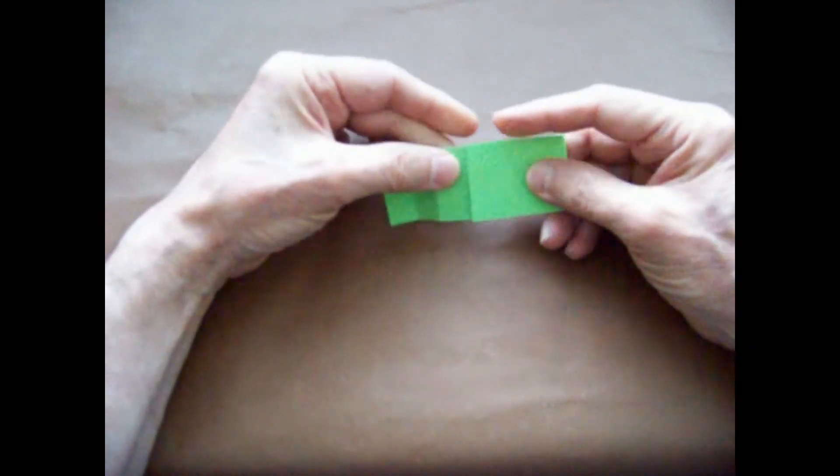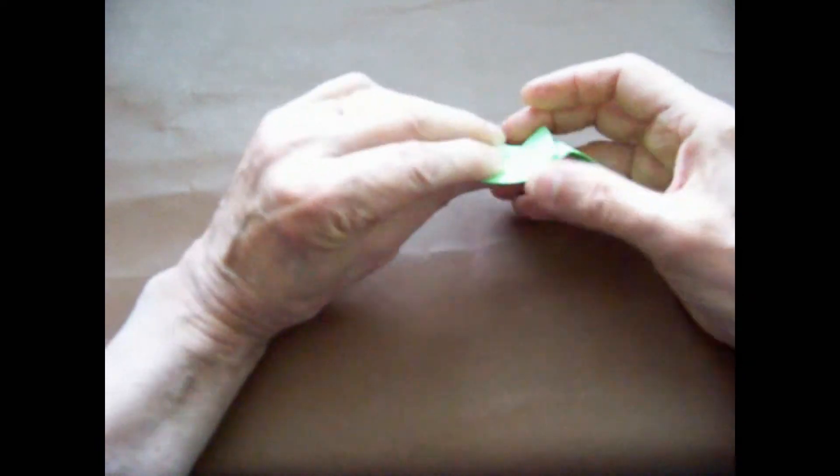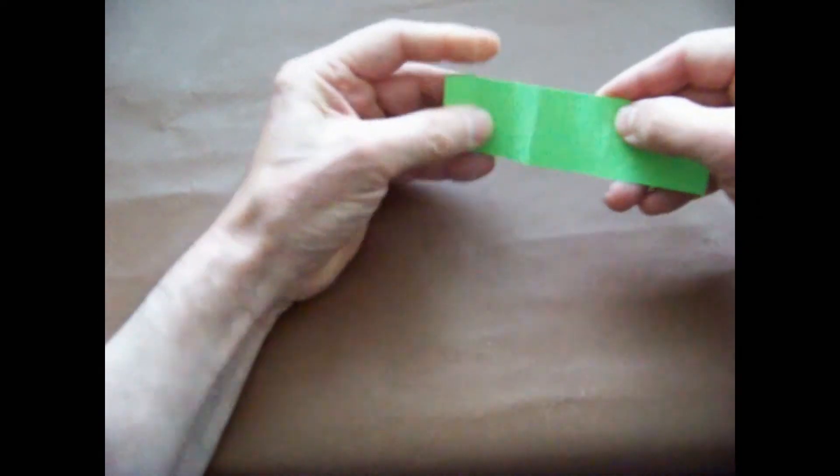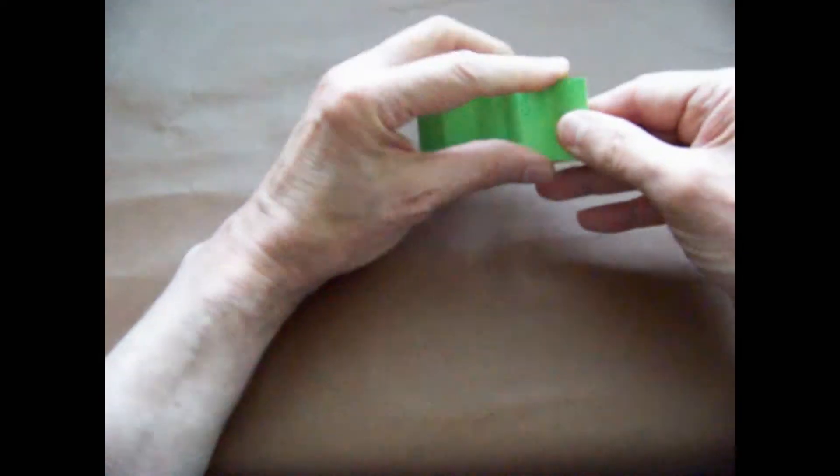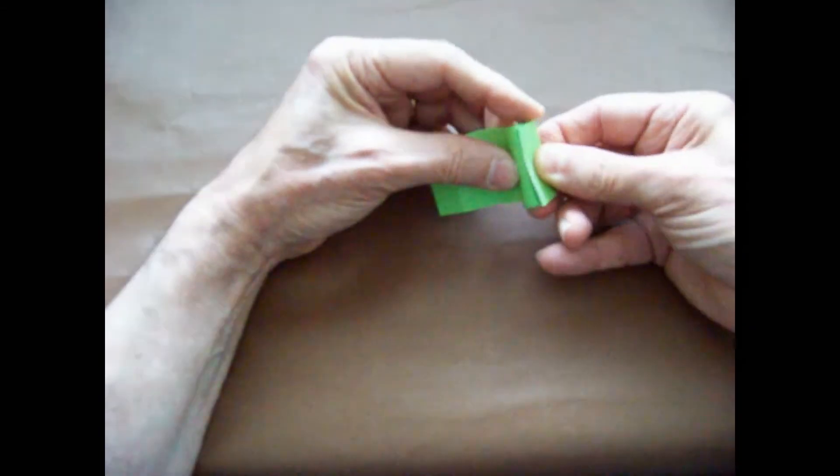So that's 1, 2, 3. And we use these lines now as a guide to make the remaining folds. We fold over on this line. We fold over on this line. And we have 1, 2, 3, 4, 5, 6. We use the last three lines as a guide for the remaining folds.